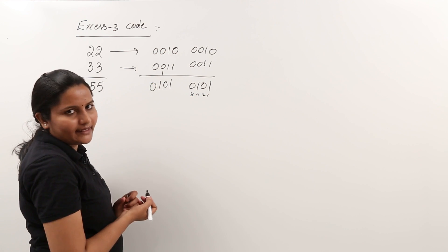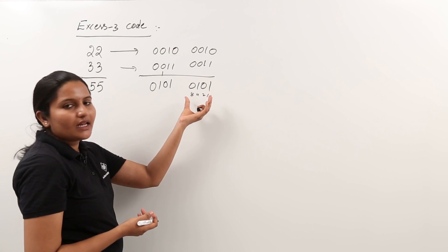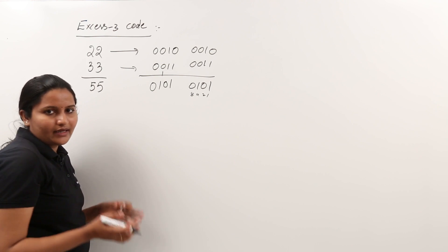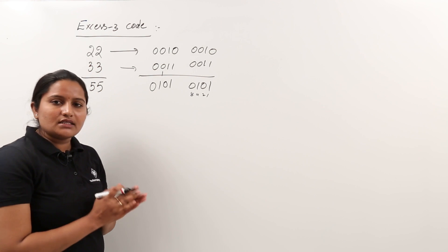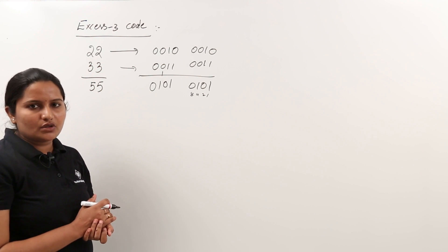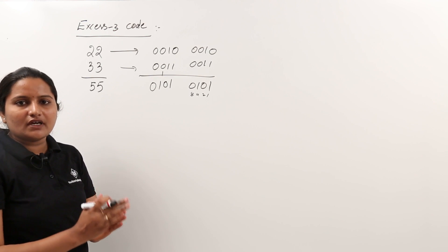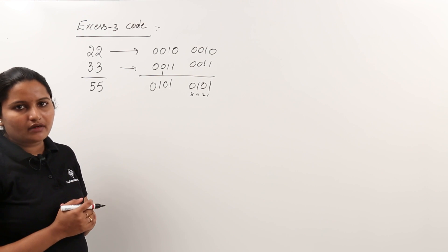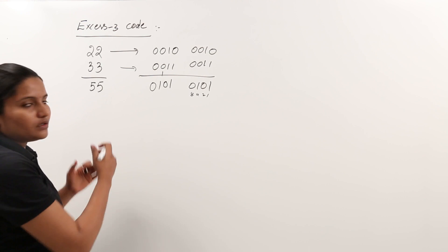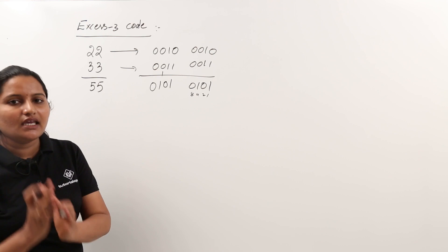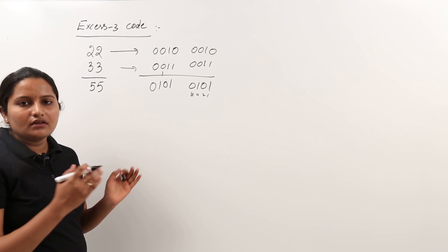Here I am writing directly means I am saving some time. This is very important for GATE-like exams. So this XS3 code is important for one mark questions. They may ask like this: What is the XS3 code for so and so BCD number? We have to add 3 for each and every digit and we have to say this is the XS3 code for given BCD.